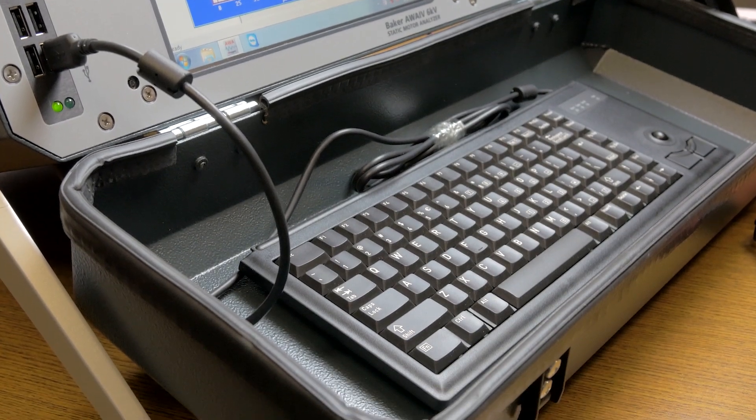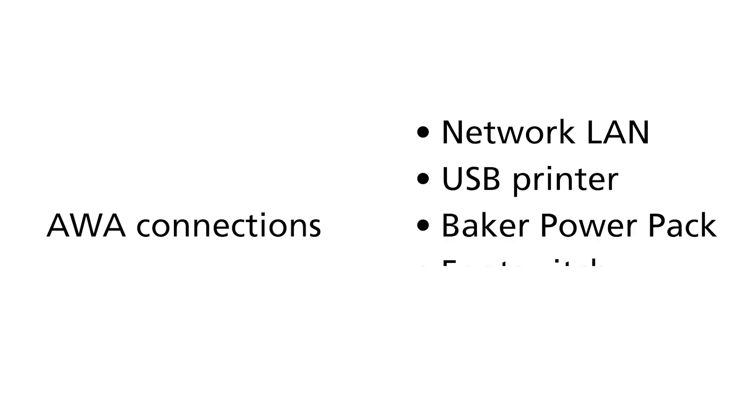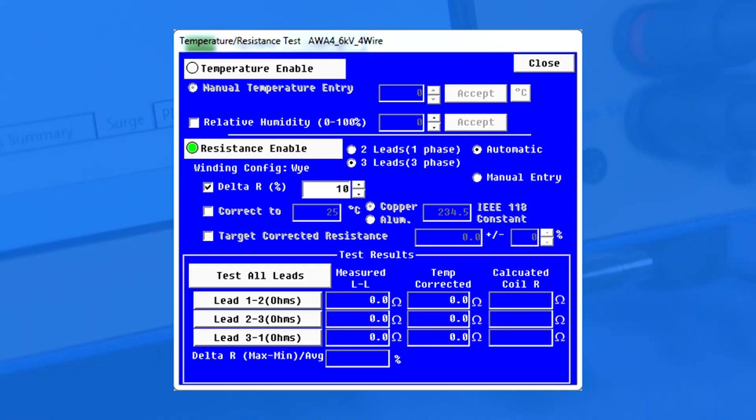A keyboard is available as well. The AWA can also connect to a network LAN, USB printer, Baker power pack, foot switch and safety lights. It also includes a resistance test for winding construction tests.